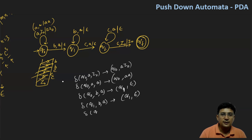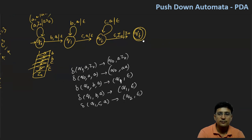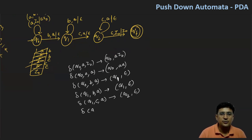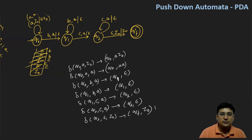Then we are in q2 state. We get 'c' and A is the top of the stack. In state q2, if we get epsilon and the stack top symbol is Z0, we move to the final state QF without making any change to the top of the stack. With this transition we reach the final state. So all the possible transitions according to the PDA diagram have been listed out.